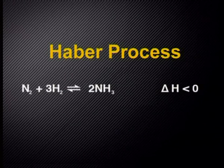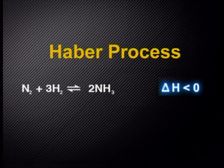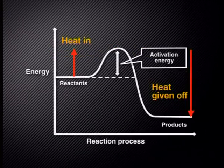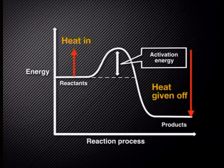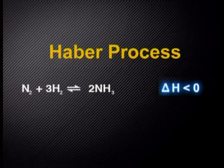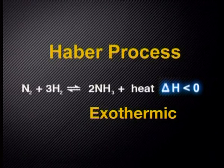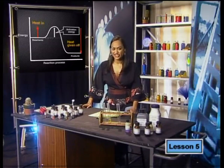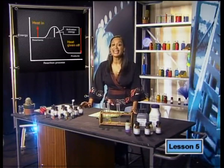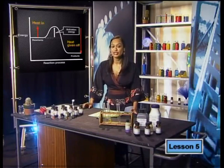Let's take a look at the Haber process again, this time focusing on temperature. Notice that the Haber process has a change in heat of less than zero — this means it is negative. For the change in heat to be negative, it means that the heat given off was greater than the heat taken in. Therefore, the forward reaction of the Haber process is exothermic, and because it is exothermic, we can consider heat as a product. If the forward reaction is exothermic, then the reverse reaction must be endothermic, meaning the reverse reaction will take in more heat than is produced — heat acts like a reactant.